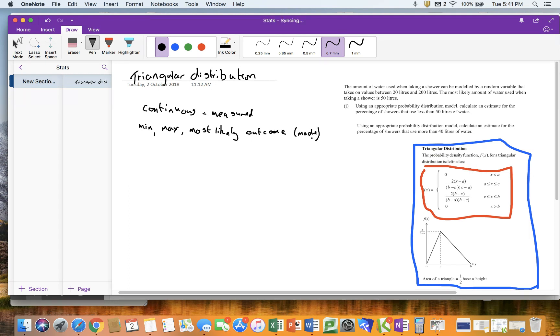Okay? And that gives me a fairly good indication that this is a triangle distribution. So if I look at my problem over here, it says the amount of water used when taking a shower can be modelled by a random variable that takes values between 20 litres and 200 litres. The most likely amount of water used when taking a shower is 50 litres. So if I have my function of x and my scale, my minimum is 20, my maximum is 200, and my mode is 50.